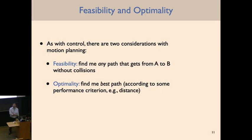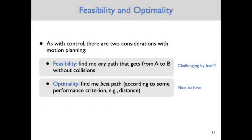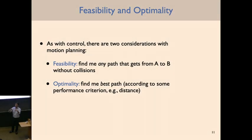A student asked whether there's a fixed sequence of moves. The answer is no — this is not an open-loop plan. The robot actually looks at the specific initial configuration of the Rubik's cube and then chooses actions accordingly to get to the final goal configuration where all faces are the same color. The sequence of actions depends on the initial configuration.